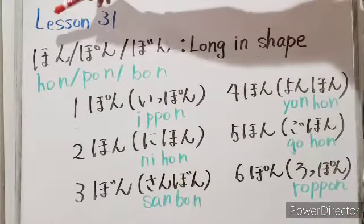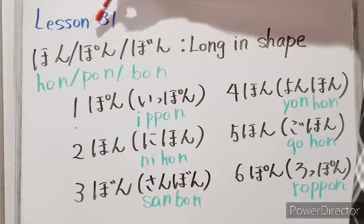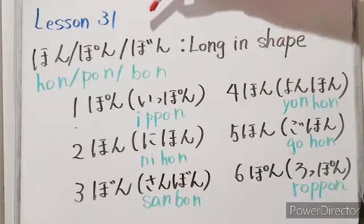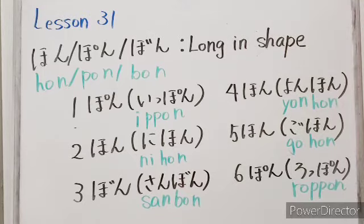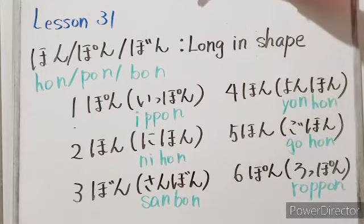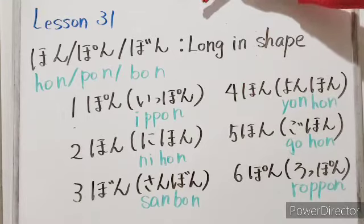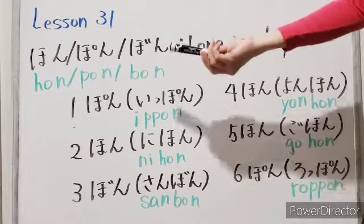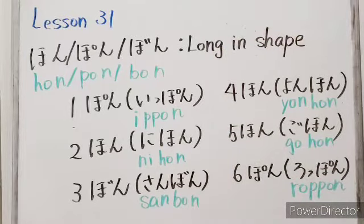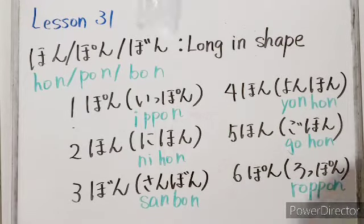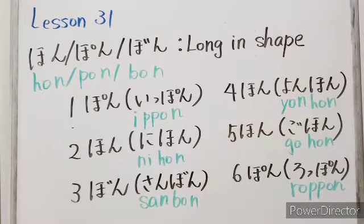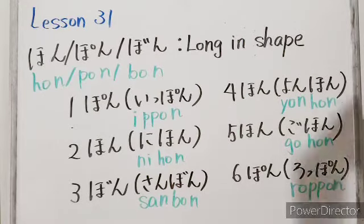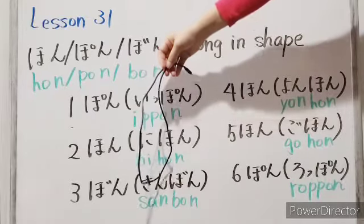Next is hon, pon, bon. Hon, pon, bon can be used to count objects that are long in shape. For example, pens, bottles, or electrical cords.